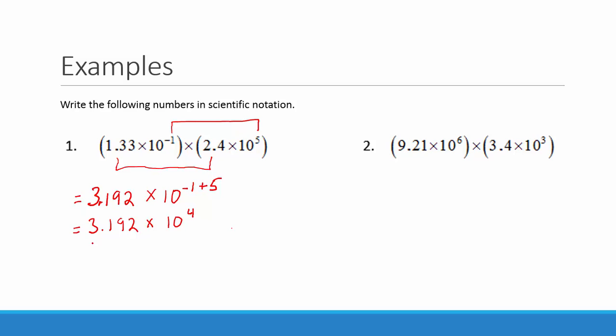We check to make sure that this is in scientific notation. We look at the left of the decimal point and we see we have one digit, a 3. Therefore, we are in scientific notation.